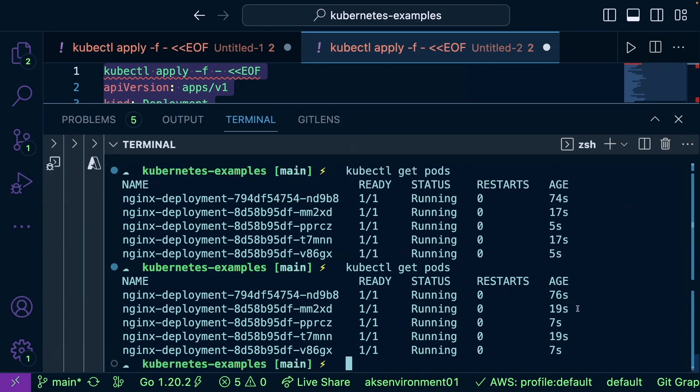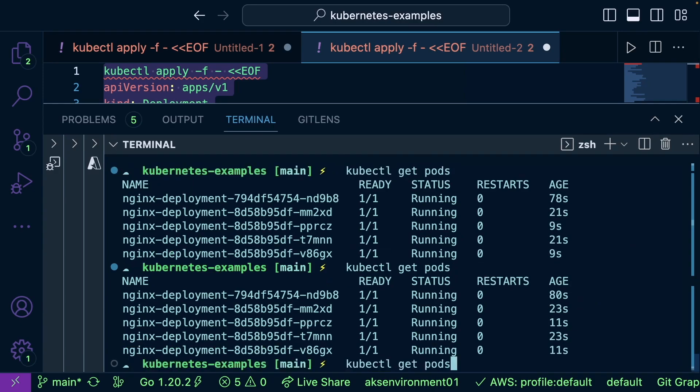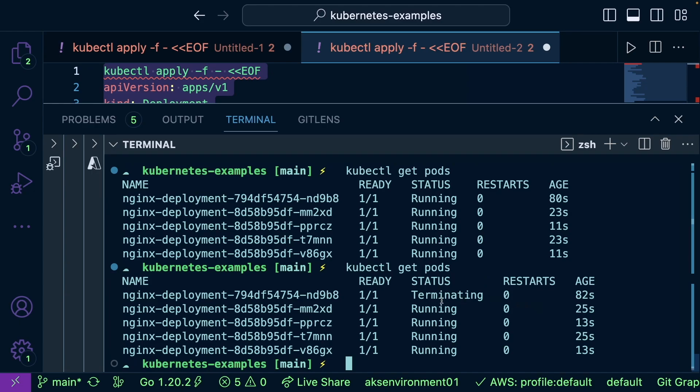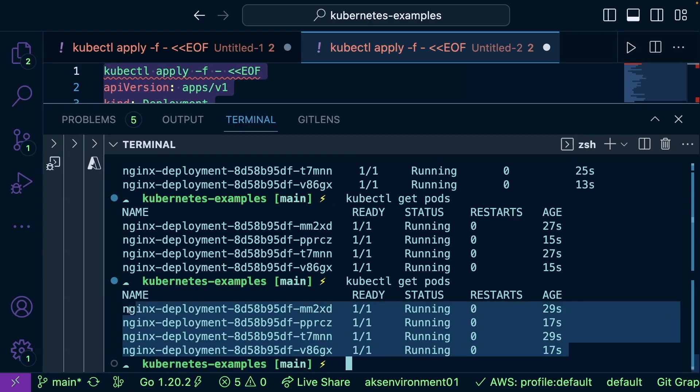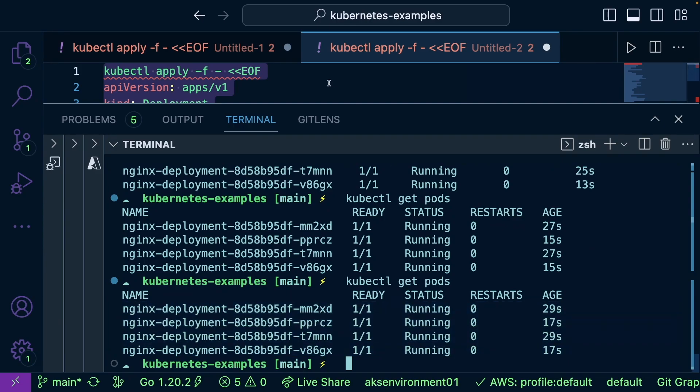We can see more new ones, less old ones. If we just keep running kubectl get pods, we can see the lifecycle of this where the old one is now terminating, and now all we have is the new version of the application running.